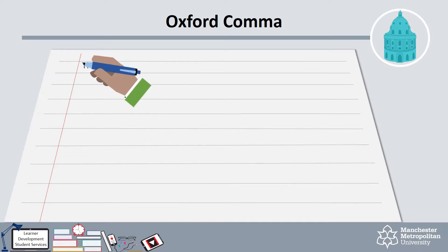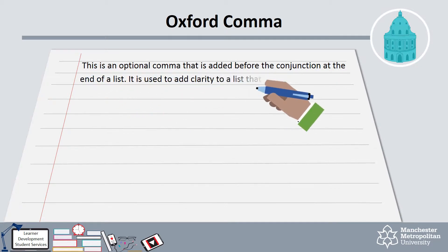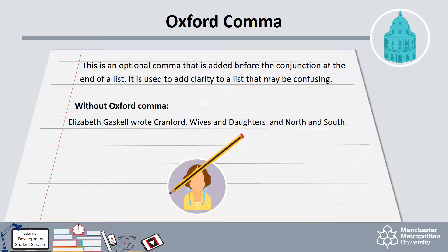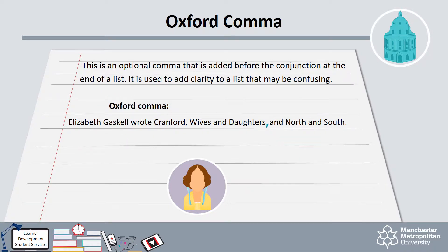The Oxford comma, sometimes referred to as a serial comma, is an optional comma before the conjunction in a list. You only need to include the Oxford comma if the list would be confusing without it. Look at this example sentence: Elizabeth Gaskell wrote Cranford, wives and daughters and north and south. Without the Oxford comma, it is not clear whether there are three or five items in the list. In example two, the Oxford comma tells us to pause before the word 'and' and helps us to see that these are separate items in the list.